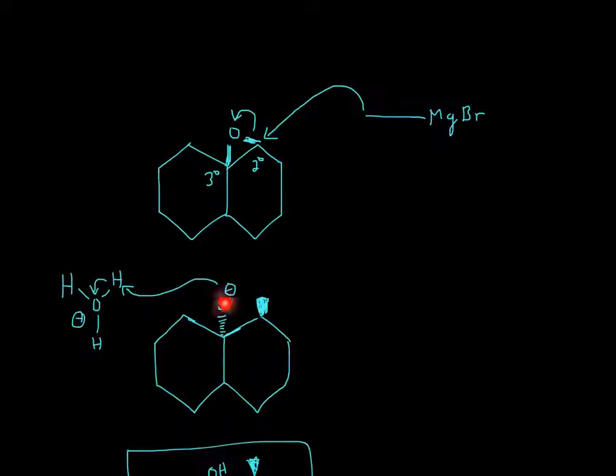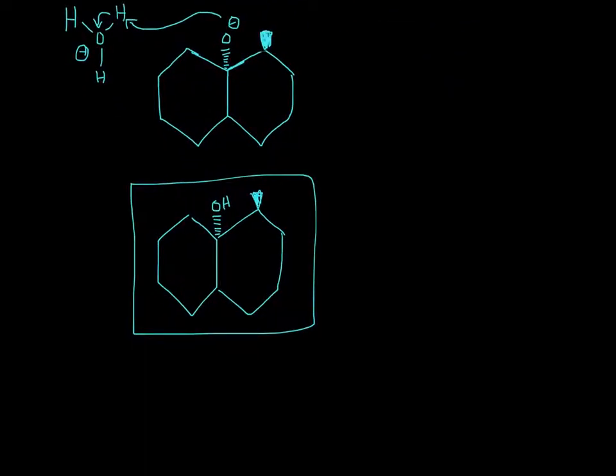Now, this would be O-, right? But it doesn't stay as O-, rarely will you have a product that has a negative charge on the oxygen. So the O- will take away a hydrogen from something in the solution, in this case. It can be H3O+, and so it will take away a hydrogen, and therefore it will become OH.